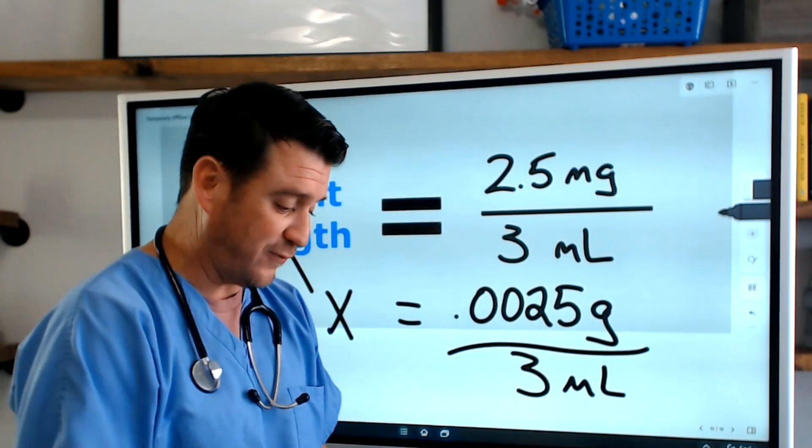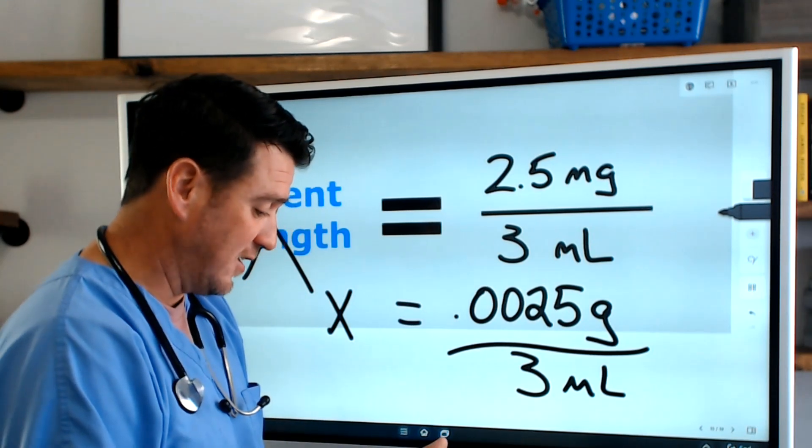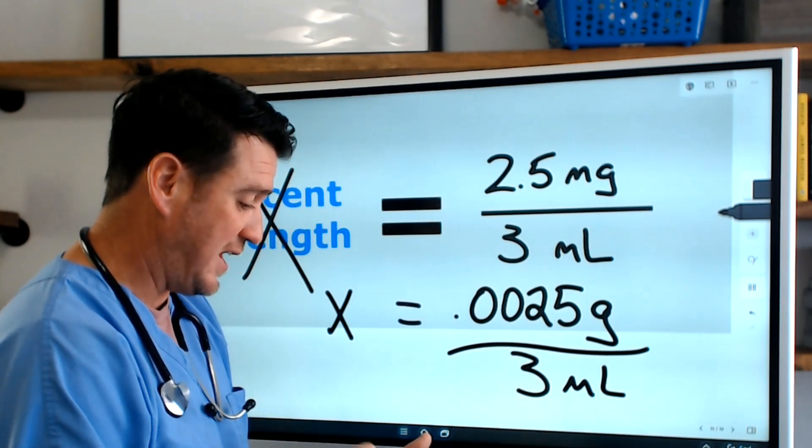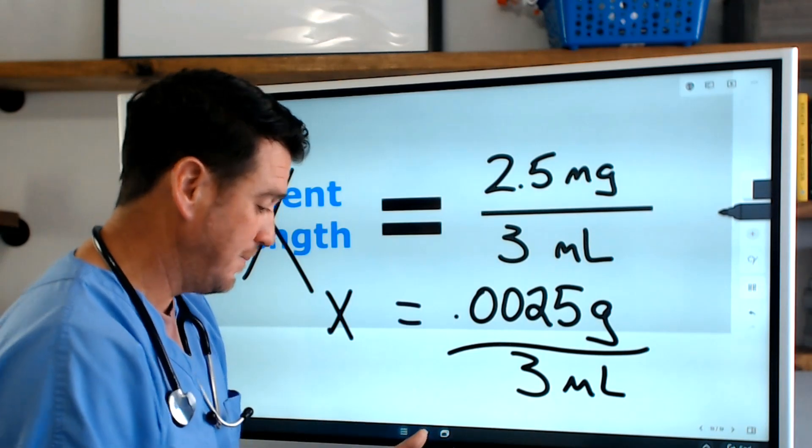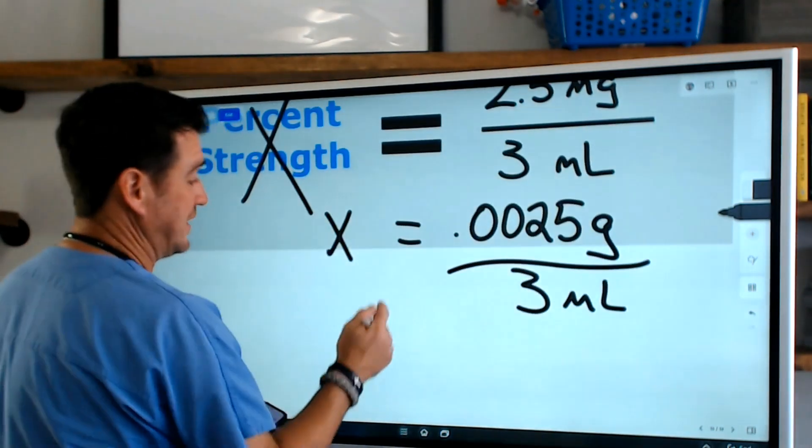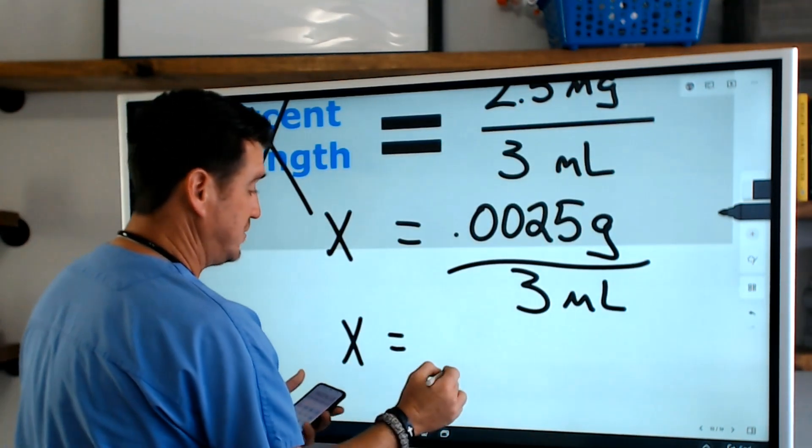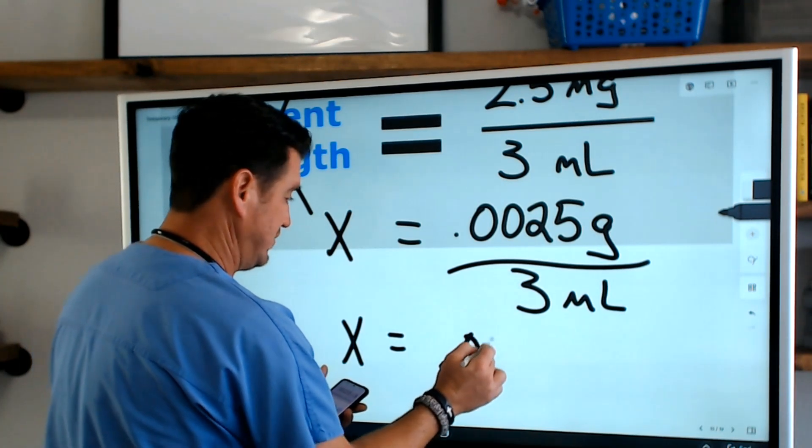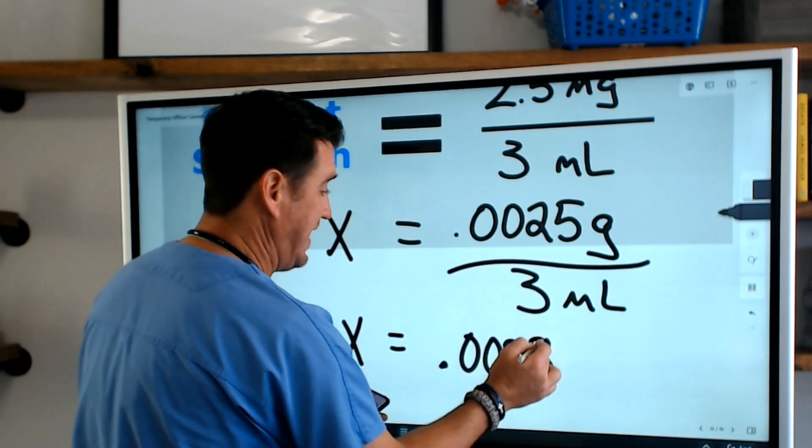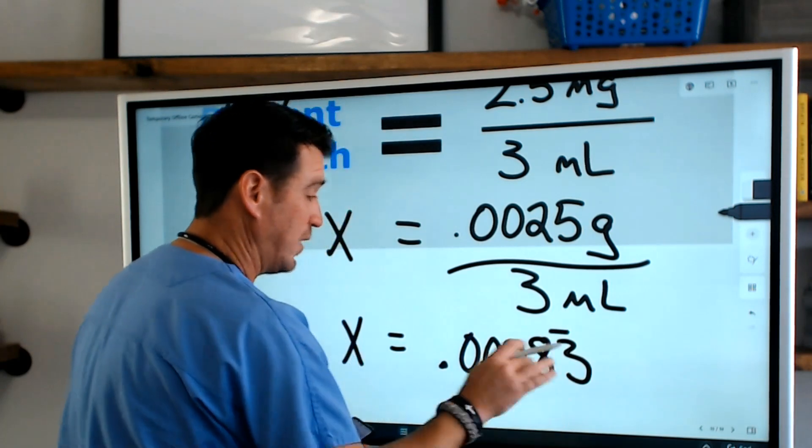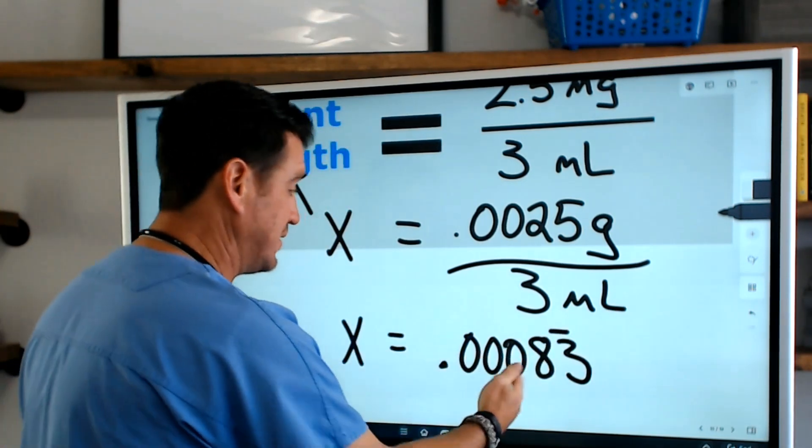Now when we do the math for that, what we get is 0.0025 divided by 3. This means that X equals 0.00083, and this 3 continues on.